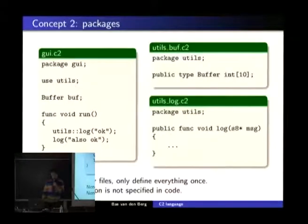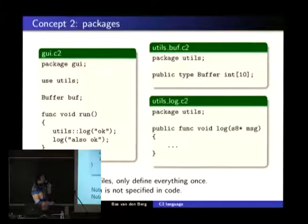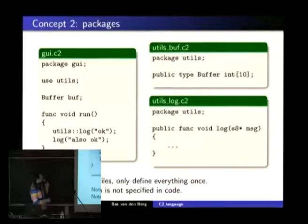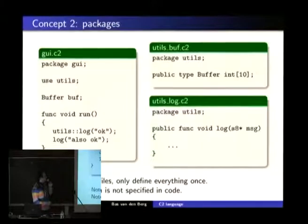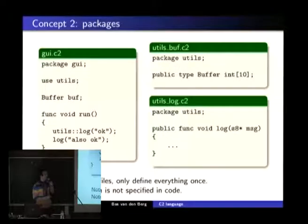The second concept you need when you don't have includes is packages. So this is a file that uses the package utils. These two files are inside the package utils — one defines a type 'buffer' and the other defines a function. For the calling site, it doesn't know where they are; it just knows they're in some package utils. If you move these files around, it doesn't matter. You can use the prefix like the C++ namespace operator, or you can leave it out if you don't want to type too much — as long as there's no conflict. If there are conflicts, you have to use the prefix.